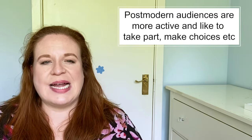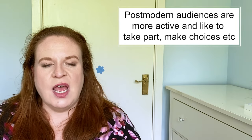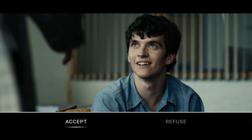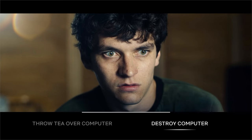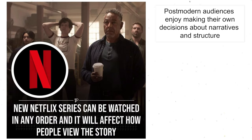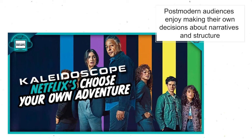Postmodern audiences like to be more active — they like to take part. We've seen that in social media where we like to comment, like, and share, and also in interactive products like interactive TV and film. In the film Bandersnatch, audiences were able to make personal choices about what route they wanted the narrative to take. In the more recent show Kaleidoscope on Netflix, audiences could decide what order to watch the episodes in, creating unique narratives.